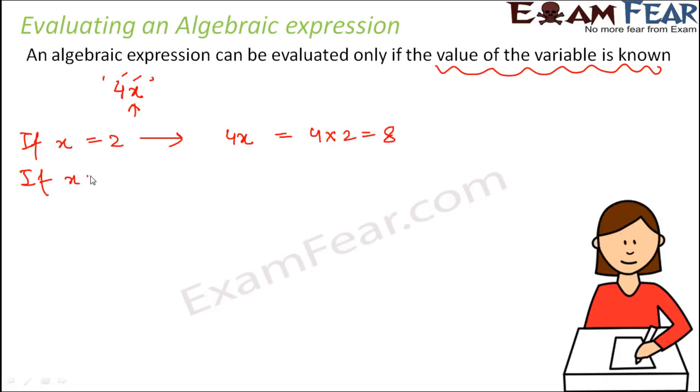If x is equal to 4, then 4x will be equal to 4 into 4 which is 16. If x is equal to 0, then 4x would be equal to 4 into 0 which is 0. So you see the value of the expression changes from 8 to 16 to 0 as the value of x changes.